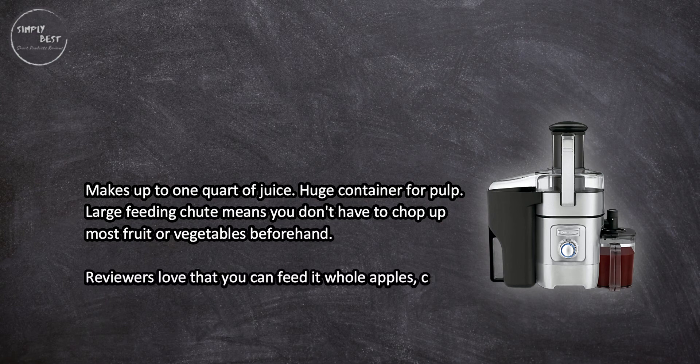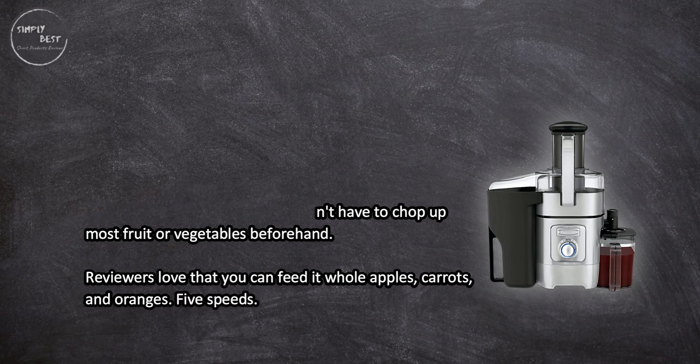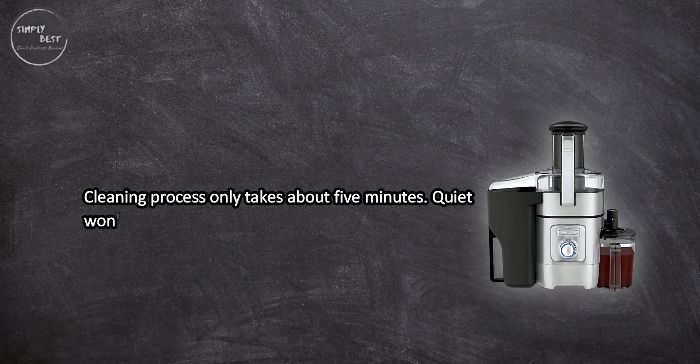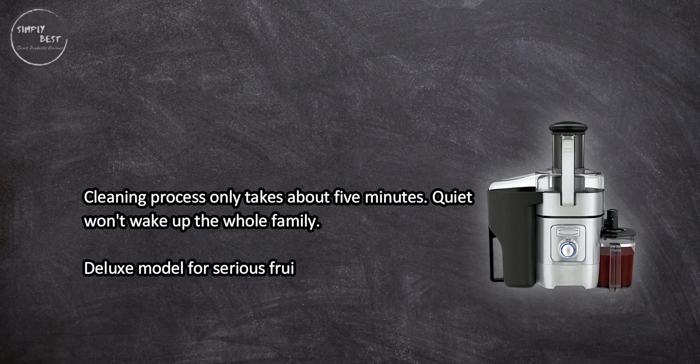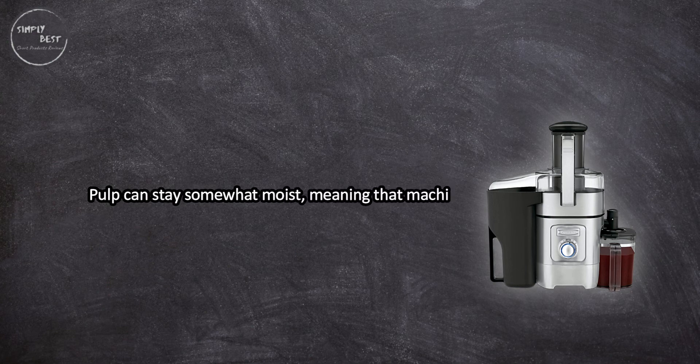Five speeds. Cleaning process only takes about five minutes. Quiet, won't wake up the whole family. Deluxe model for serious fruit and veggie juicers. Pulp can stay somewhat moist, meaning that machine doesn't get out all of the juice.